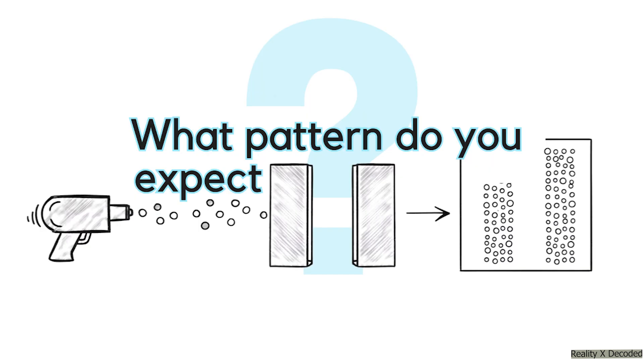So what's your gut tell you? What should happen? We're firing individual particles one by one. Logic, common sense, everything tells us we should just get two simple stripes on the screen, just like we would with tiny bullets.